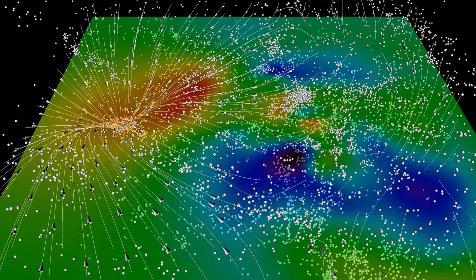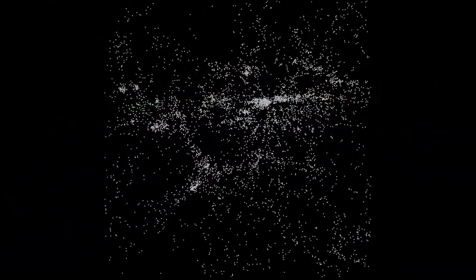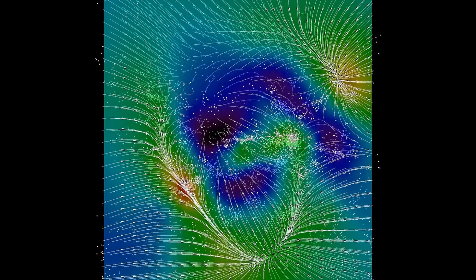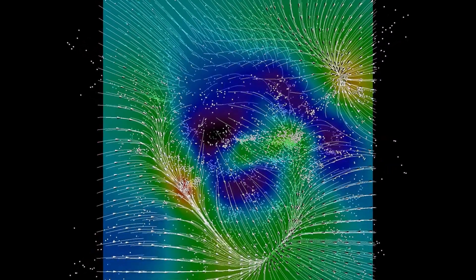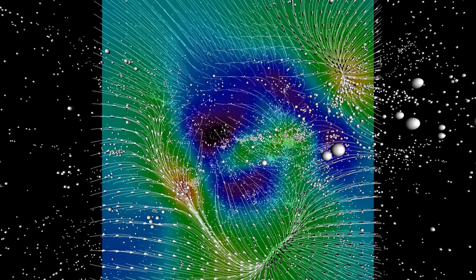Galaxies only seem to form around these filamentary structures. Their material is garnered from the spaces in between, and as time goes by, more and more material is drawn into this filamentary structure.